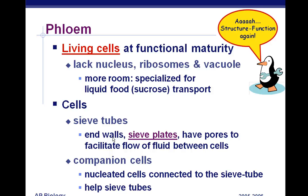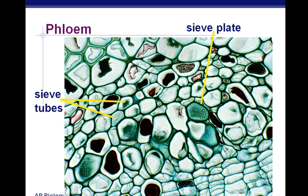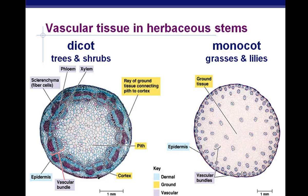Why don't you review at this point and think about the differences between phloem and xylem. This ends Part 2 of your notes on Chapter 35, Plant Anatomy.